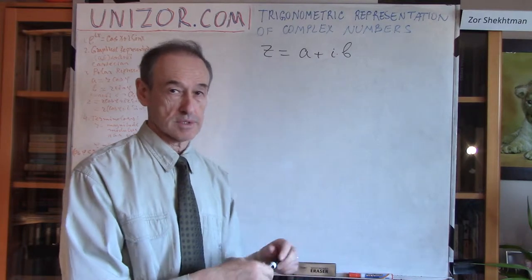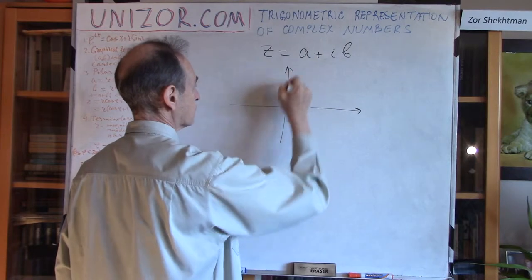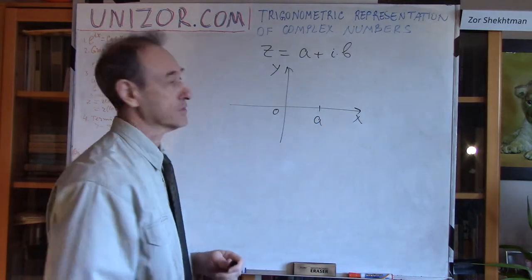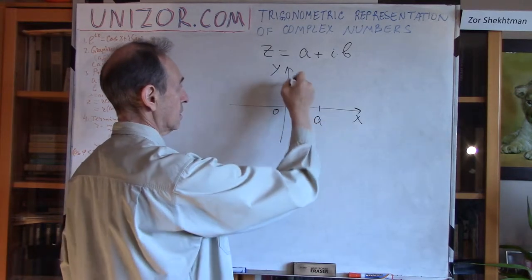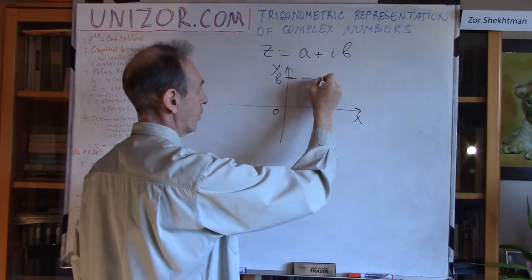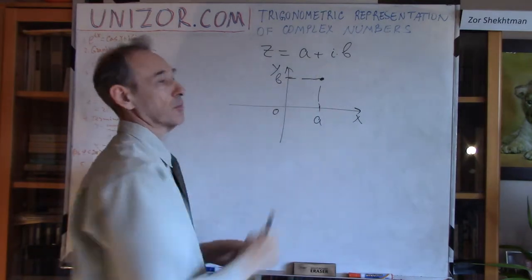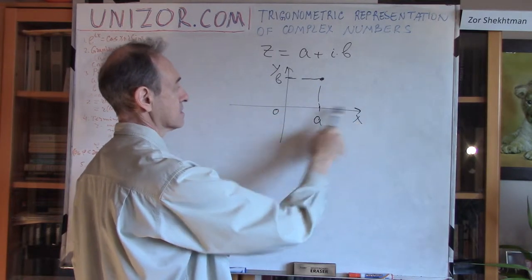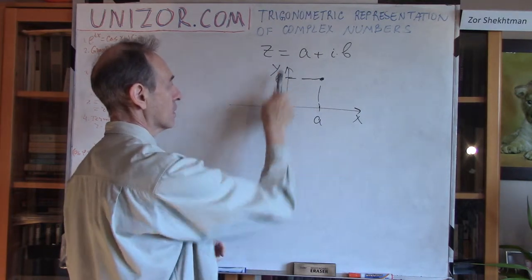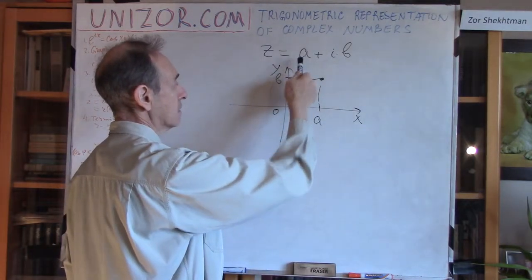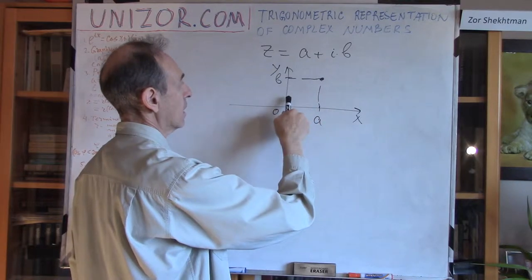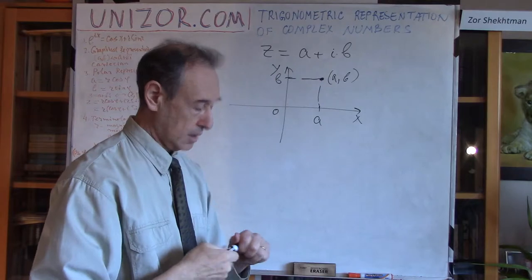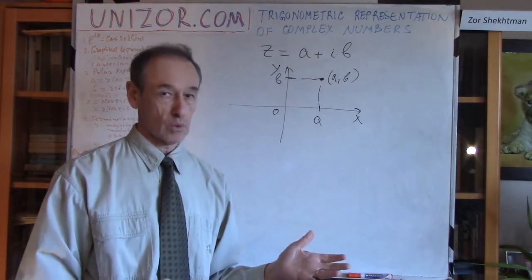Next is the graphical representation, which is very simple. If we have two axes, we can put the real part of the complex number as the abscissa and the imaginary part as the ordinate, and this point is the graphical representation of the number. The unit of measurement along the horizontal x-axis is 1, and the unit of measurement along the y-axis is i. So we have a units along the real axis and b units along the imaginary axis, and the point (a, b) represents our complex number in Cartesian coordinates.